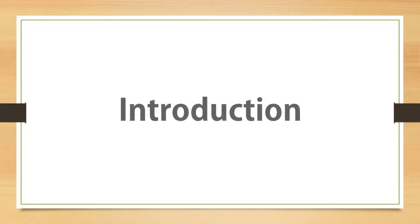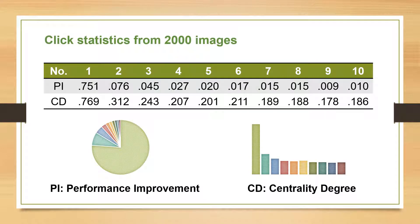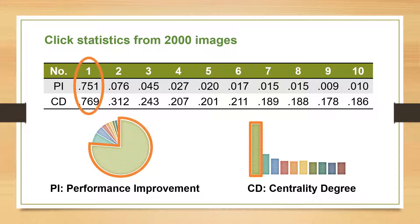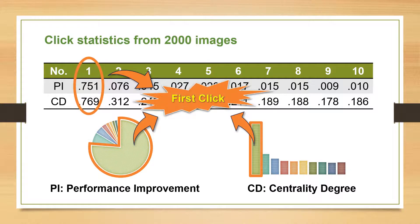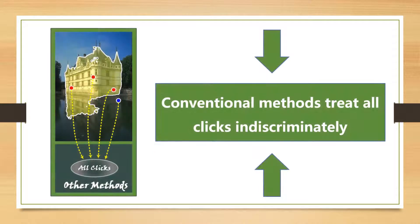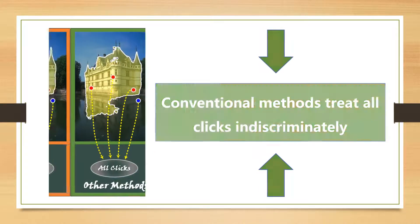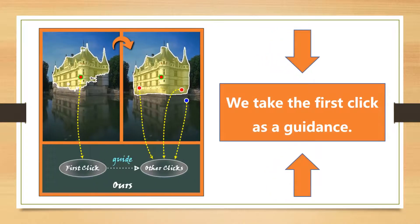We collected statistics of user interactions from 2000 images. We found that the performance improvement and centrality degree of the first click is significant. Conventional methods treat all clicks indiscriminately, whereas we take the first click as guidance.